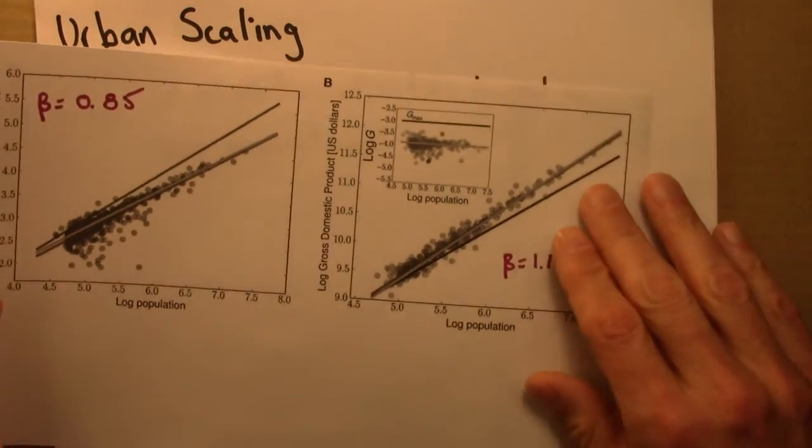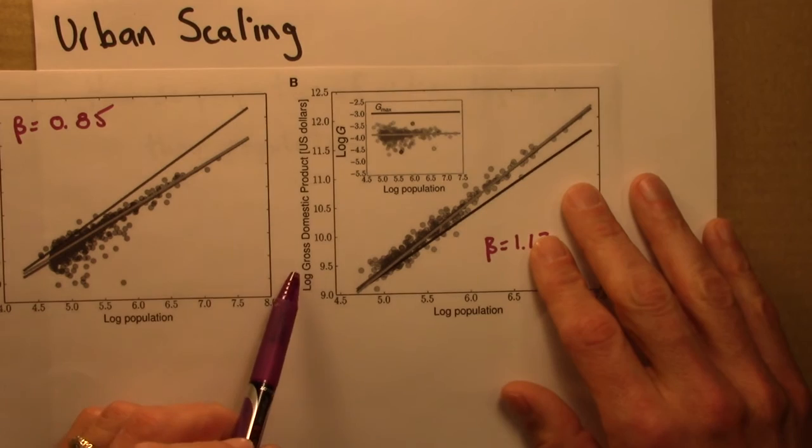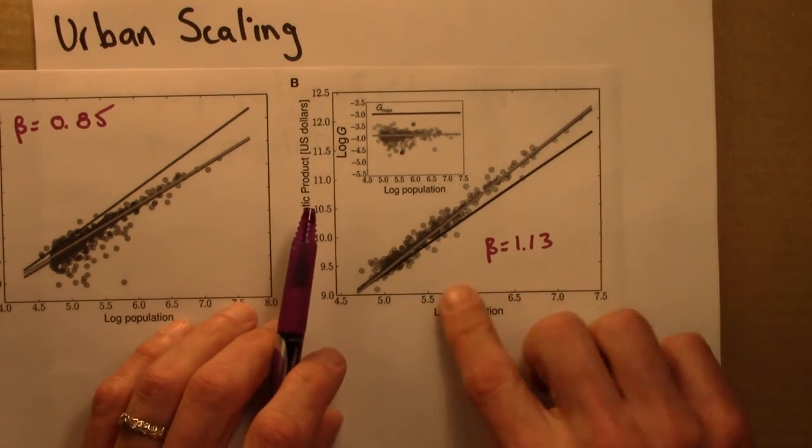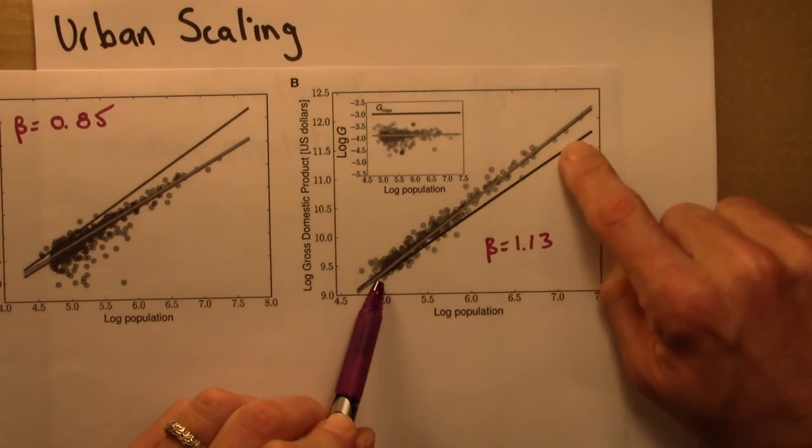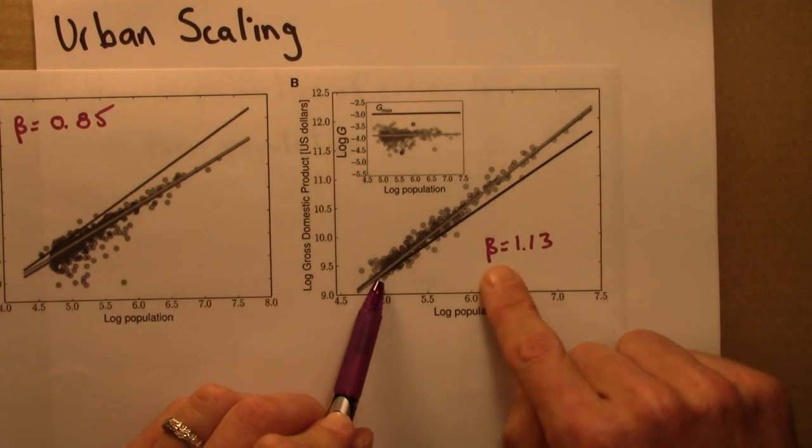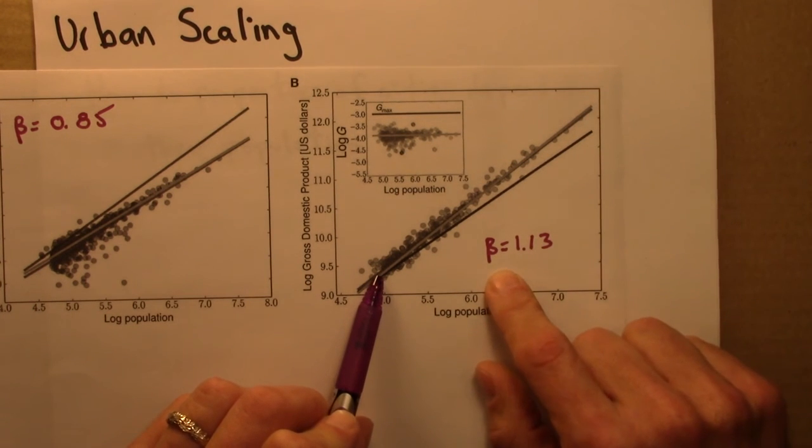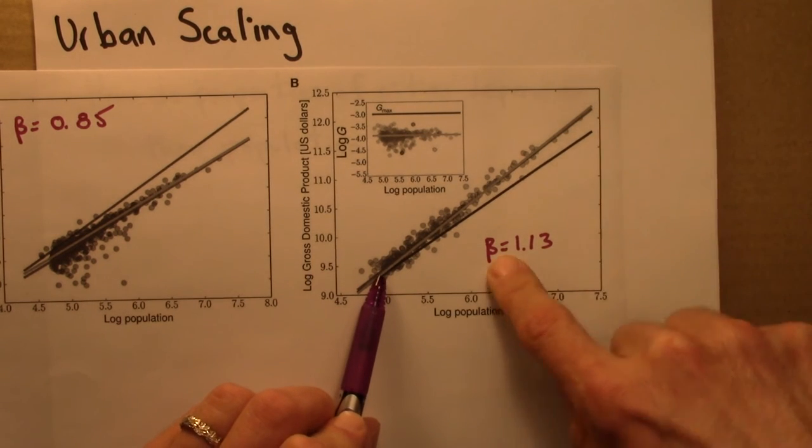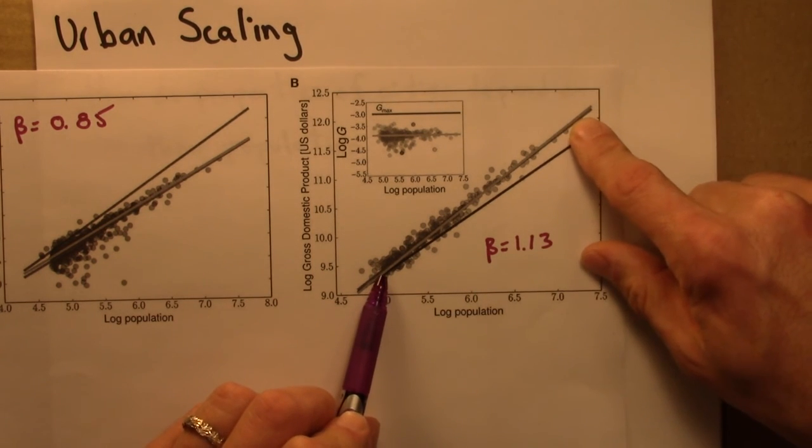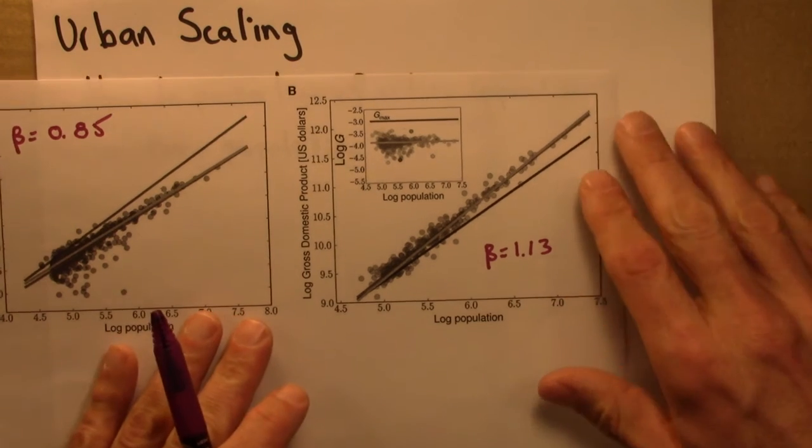And here's one more GDP plot. This is for US cities. Again, we're seeing faster than linear growth. This black line would indicate linear growth. That's a slope of 1. The measured beta, the measured exponent, is 1.13. So, that's faster than linear. And there are actually two lines here. One is the measured exponent, and the other is that predicted by a theory.